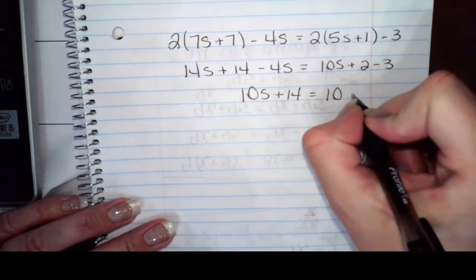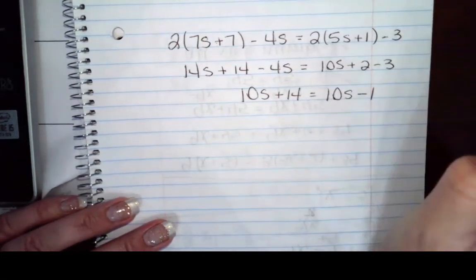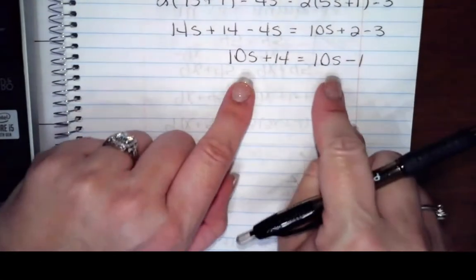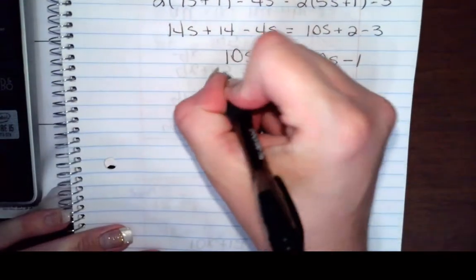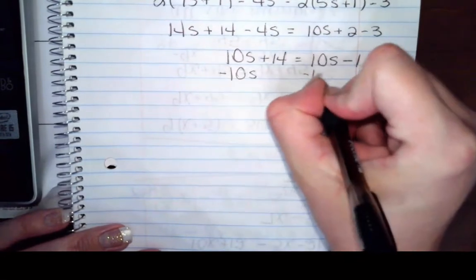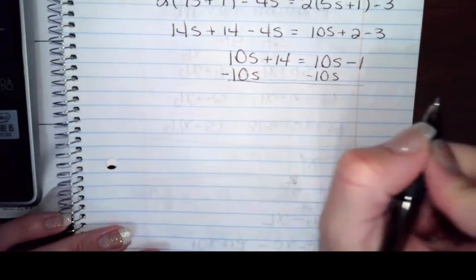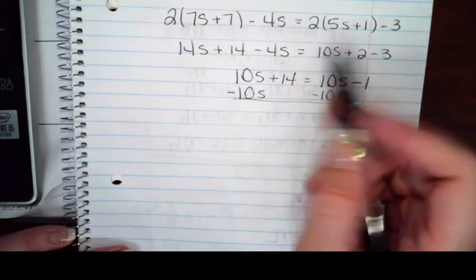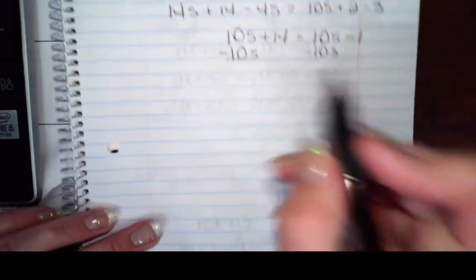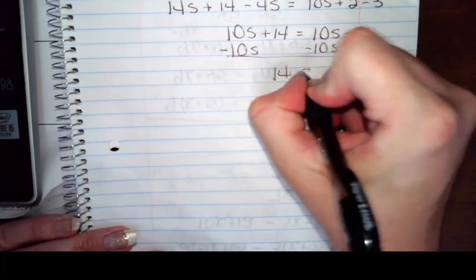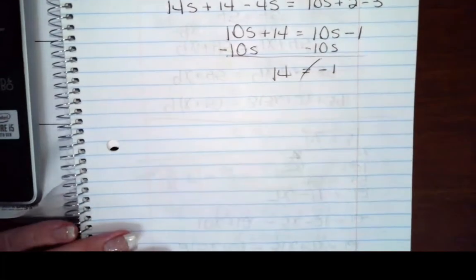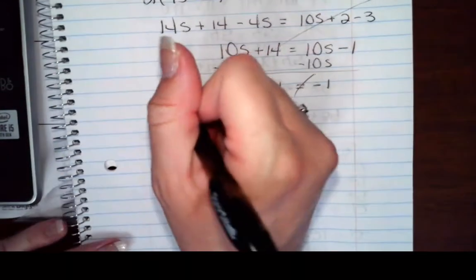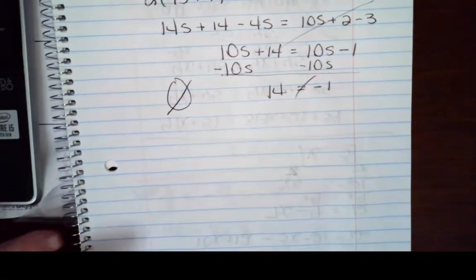So 2 minus 3 is negative 1. Now you should notice something. Your s's are fixing to cancel. Subtract 10s from both sides, which looks suspiciously like 105. That's why I usually put hats on my 5s. So that gives me 14 equals negative 1. Well, that's not true. So none of this works. Your solution is the empty set. Nothing is ever going to make that work.